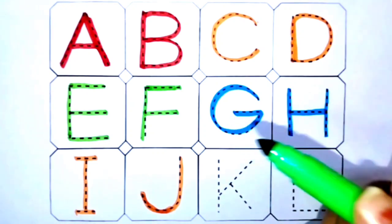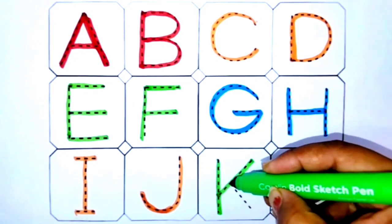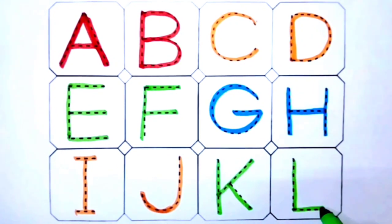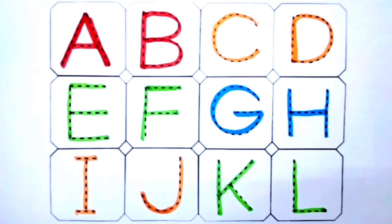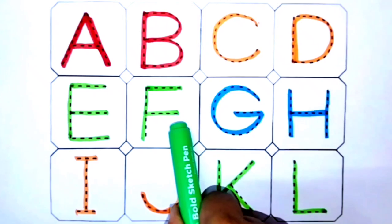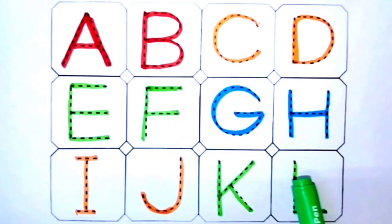Green color: K for king, L for lion. Review: A, B, C, D, E, F, G, H, I, J, K, L.